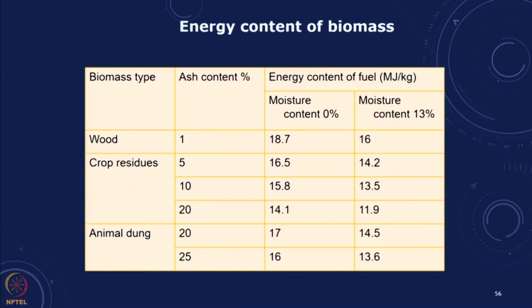Biomass energy content is slightly lower than coal but is abundant, though in some cases it has alternative uses — as fodder for cattle, as feedstock, or for thatching houses. We have to look at supply and demand, and if talking of animal dung, how do we collect and process it. We can estimate by knowing the wheat and rice production in different regions, multiplying by the residue ratio per ton of product to find how much residue is produced, along with its energy content.